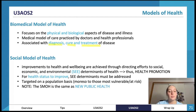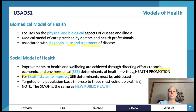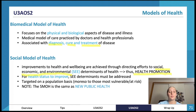Whereas the social model is about directing efforts to the social, economic, and environmental determinants of health, which is done through health promotion. For health status to improve, we must address these determinants. It's targeted on a population basis — not just each individual, as the biomedical model sees patients individually. The social model addresses big population groups at once.